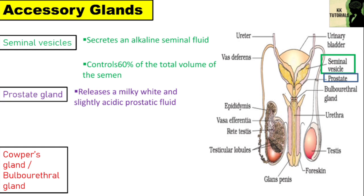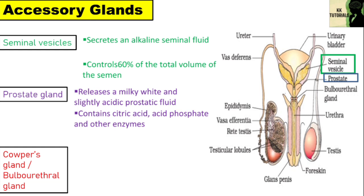The prostatic fluid contains citric acid, acid phosphatase and various other enzymes. The acid phosphatase protects the sperms from the acidic environment of the vagina. The prostate gland forms about 30% of the volume of semen.